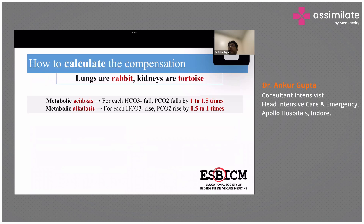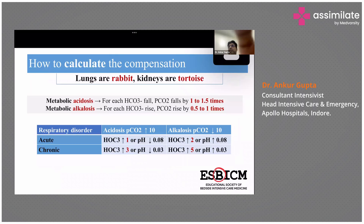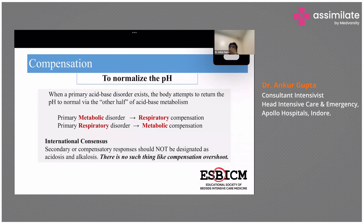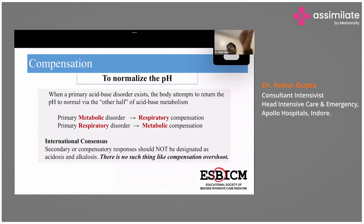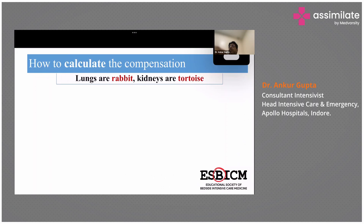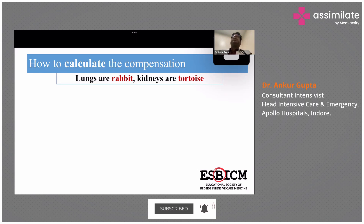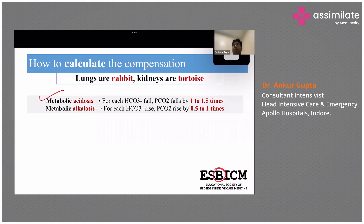Compensation means that whenever there is an abnormality in one component — whether the acid component or the PCO2 component — the body's other mechanism tries to compensate and bring the pH back toward normal, because the body wants pH between 7.35 and 7.45. If there is a metabolic component, the respiratory system takes over to compensate. Importantly, lungs act faster and kidneys act slower — lungs are the rabbit and kidneys are the turtle.